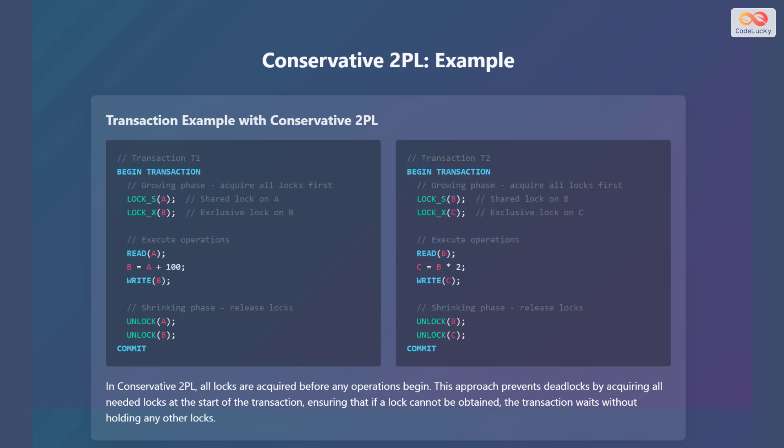Here is an example of a transaction using conservative two-phase locking. Consider two transactions, T1 and T2. Transaction T1 begins by acquiring a shared lock on data item A and an exclusive lock on data item B. It then reads data item A, increments its value by 100, and writes the new value to data item B. Finally, it releases the locks on A and B and commits the transaction.